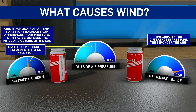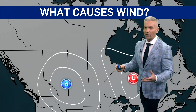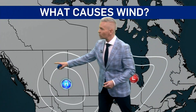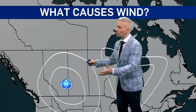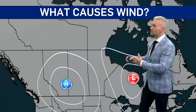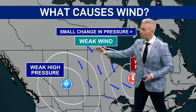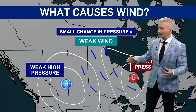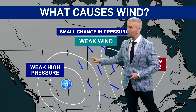So let's relate that to a real world weather situation. When you have two different air masses — one of high pressure and one of low pressure — these white lines around are called isobars; they're lines of equal pressure. This is a weak high pressure system and a weak low pressure system. If that is the case, the small change in pressure — the atmosphere trying to create balance — will create a weak wind between the two.